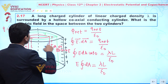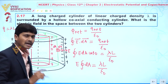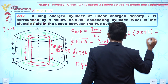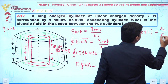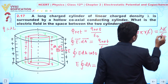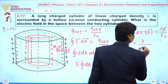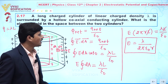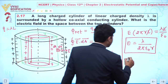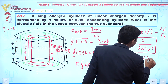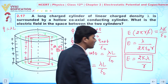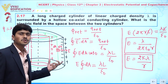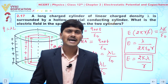The surface area of the Gaussian cylinder is 2 pi R times L. So E times 2 pi R L equals lambda L over epsilon naught. The L cancels out, giving us E equals lambda over 2 pi epsilon naught times R, or equivalently E equals 2k lambda over R. This is the electric field between the two coaxial cylinders.